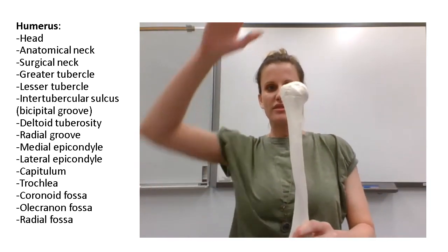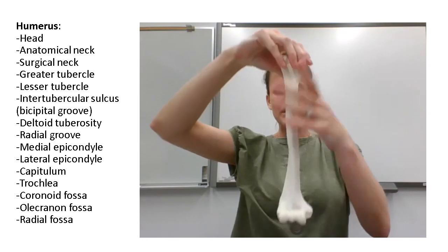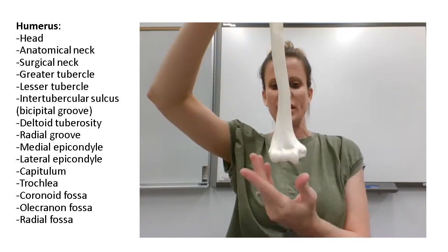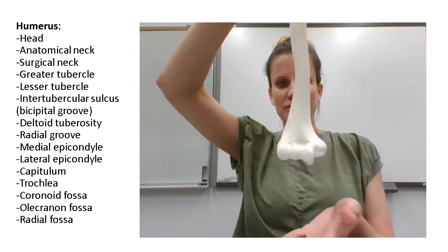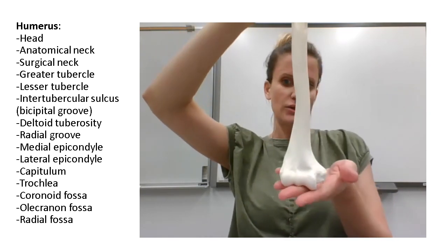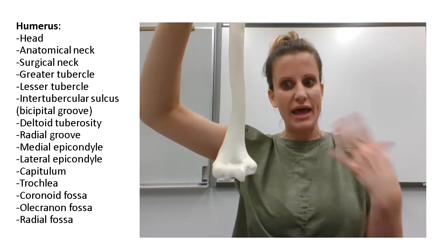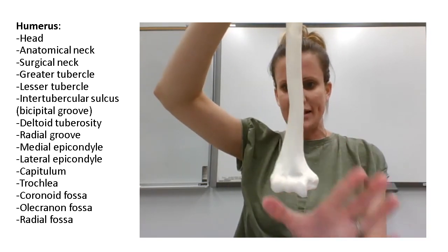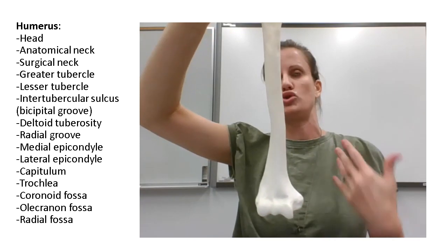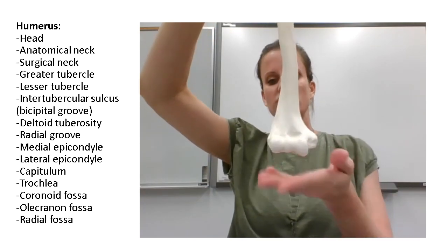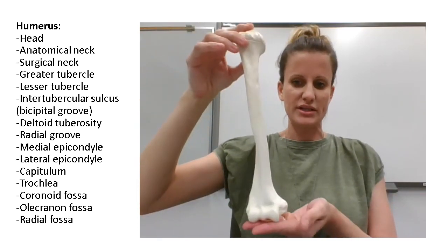That's the top of the humerus. When we make our way down the shaft and get to the bottom of the humerus, this is the distal epiphysis. Epiphyses are the widened ends of the bones where they typically form joints. Here we're looking at the distal one, at the bottom of the humerus.